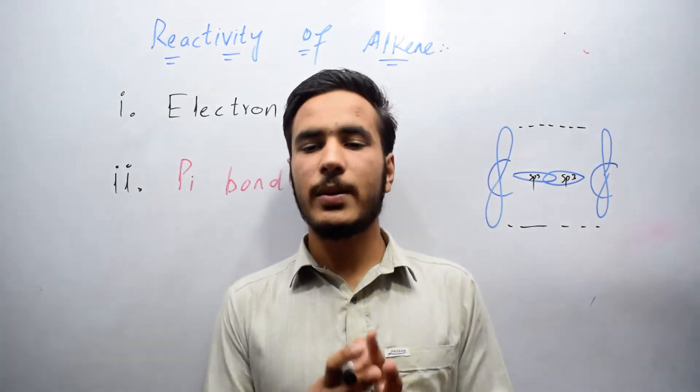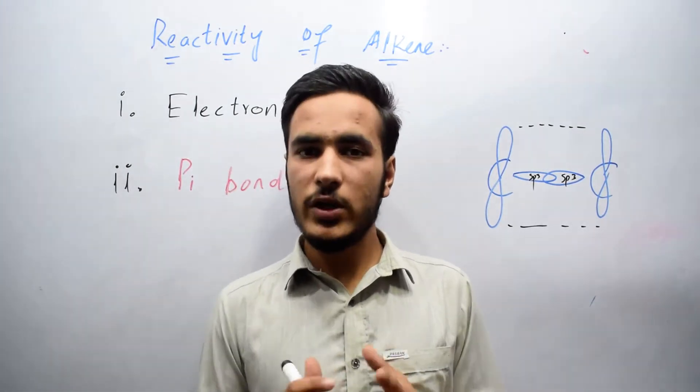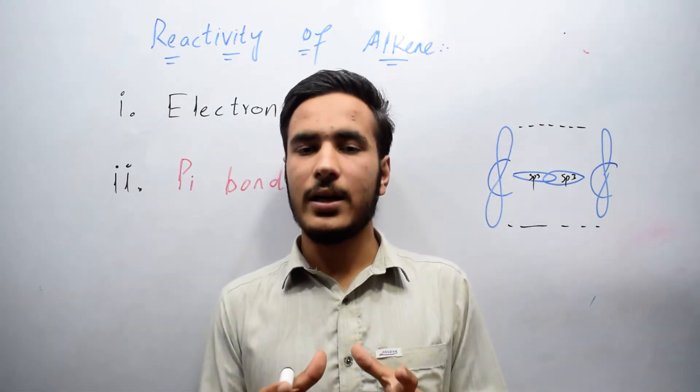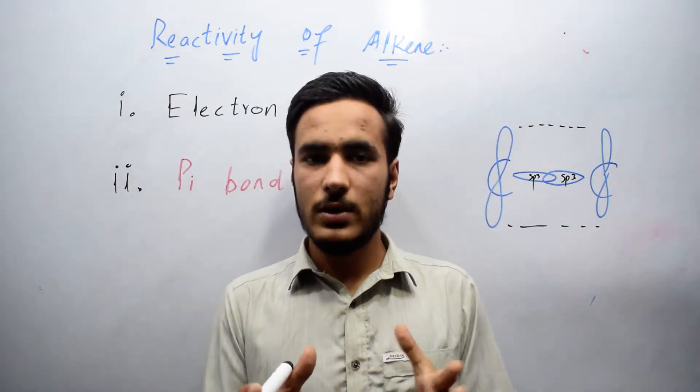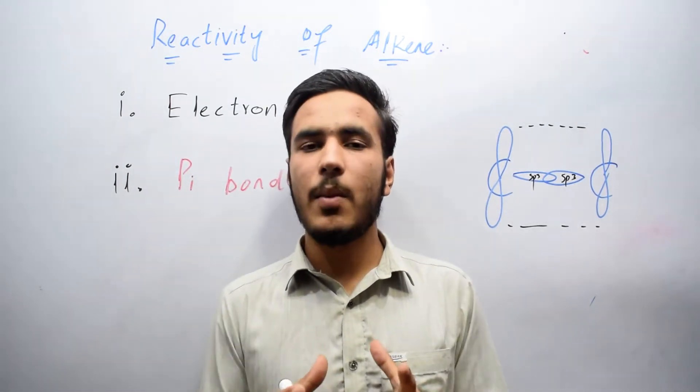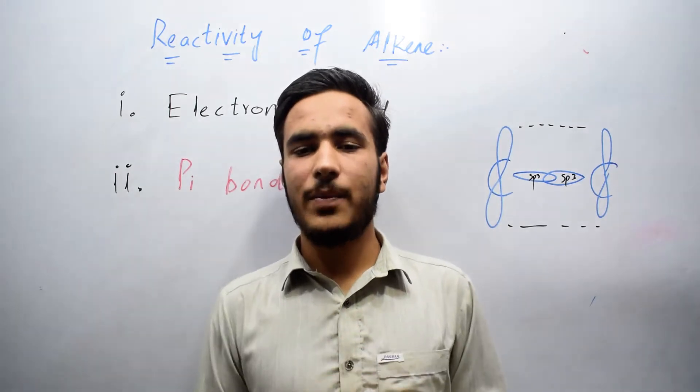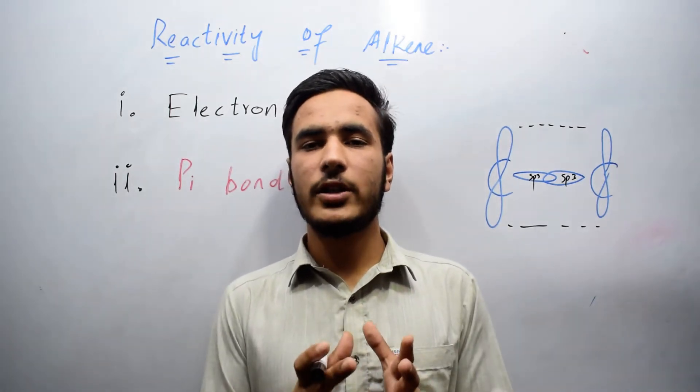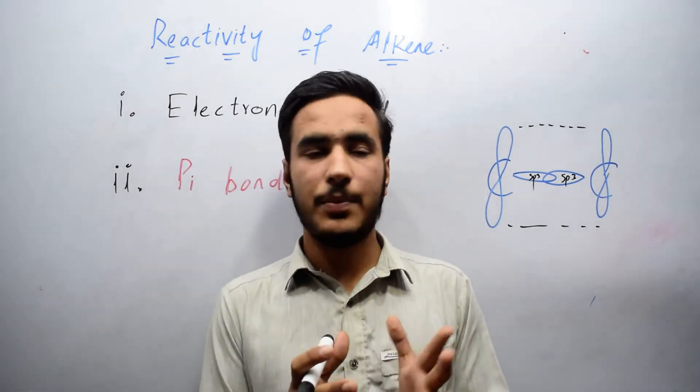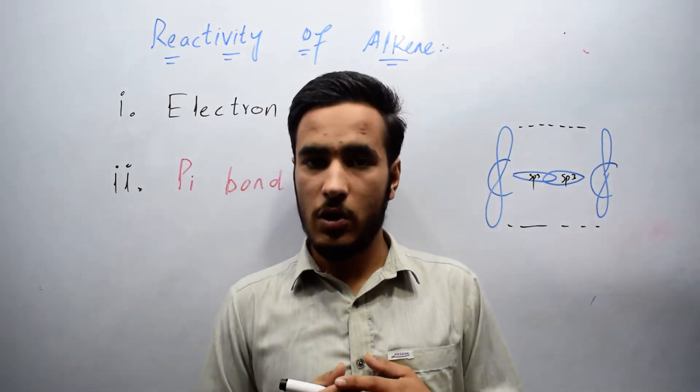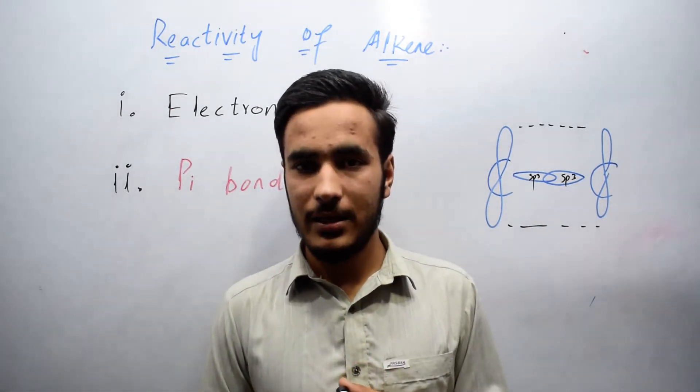In alkene, each double bond consists of one sigma bond and one pi bond. Sigma bond is formed by linear overlapping while pi bond is formed due to sidewise overlapping. Sigma bond is stronger than pi bond. Energy required per sigma bond is 83 kilojoules per mole, while energy required for breaking a pi bond is just 63 kilojoules per mole.